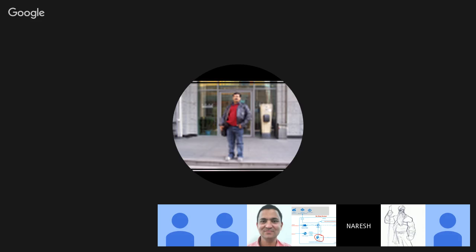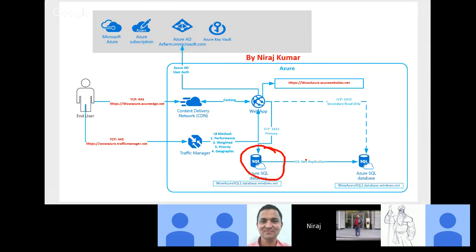For storage, it's included — you don't pay separately. Your charge is only for the SQL instance. Standard tier gives you up to 250 GB with geo-replication and you can restore up to 14 days. Premium gives you up to 1 TB — now going up to 10 TB, though still in preview — with active geo-replication, a maximum replication lag of 30 seconds, and 35 days of restore capability.